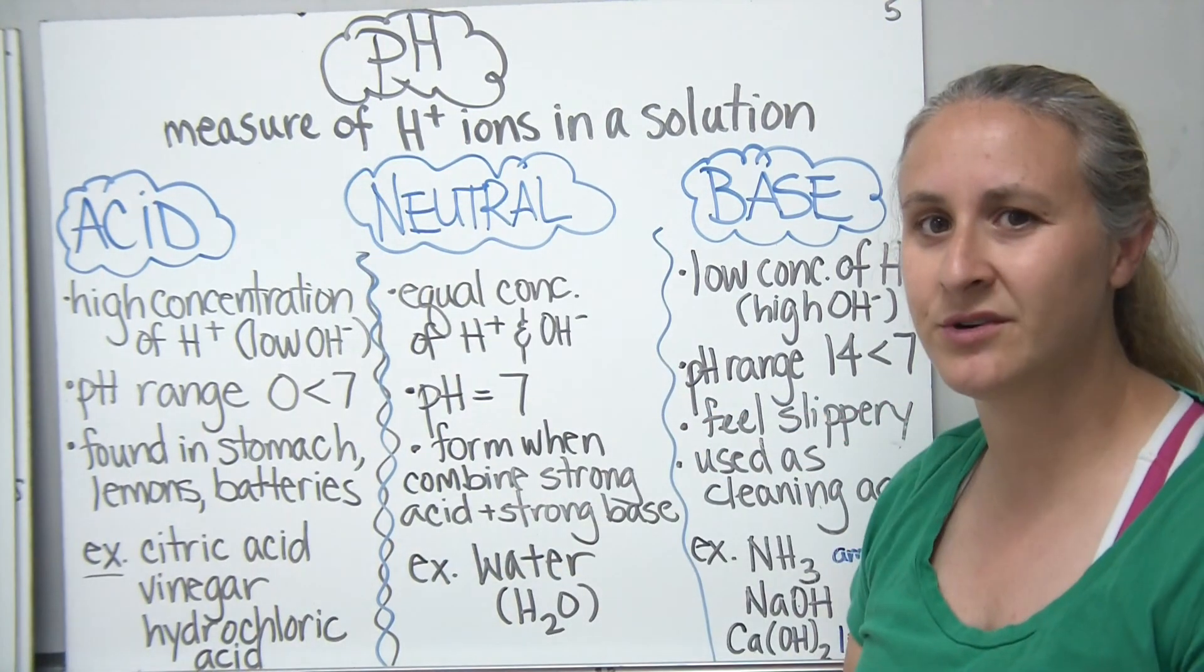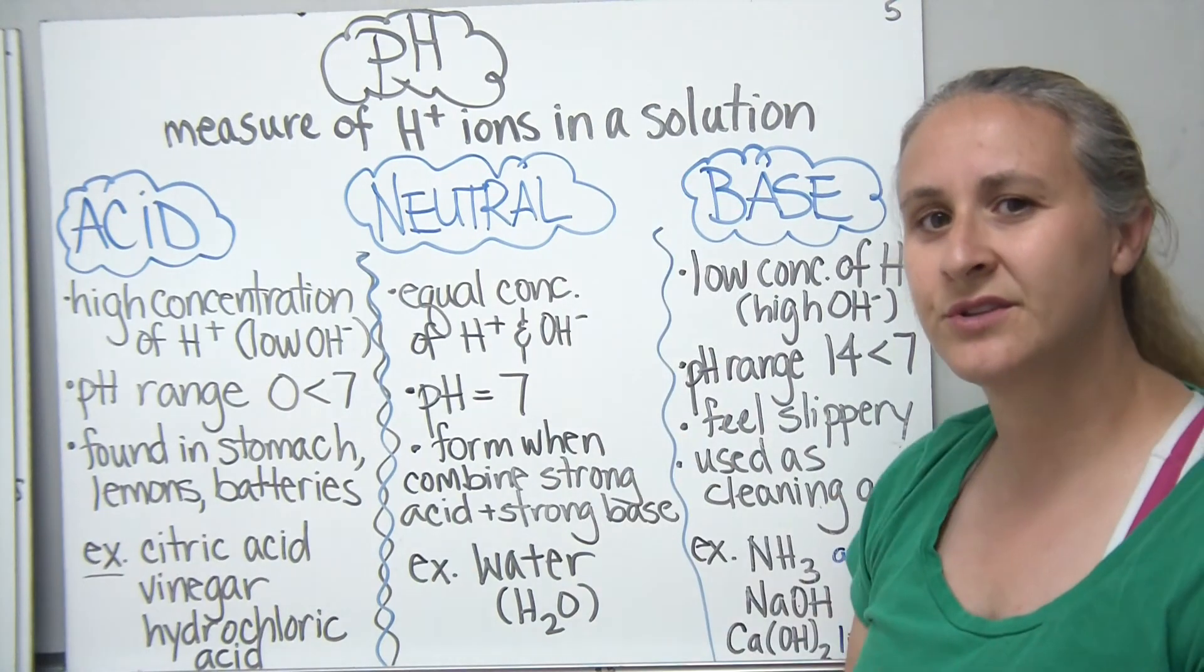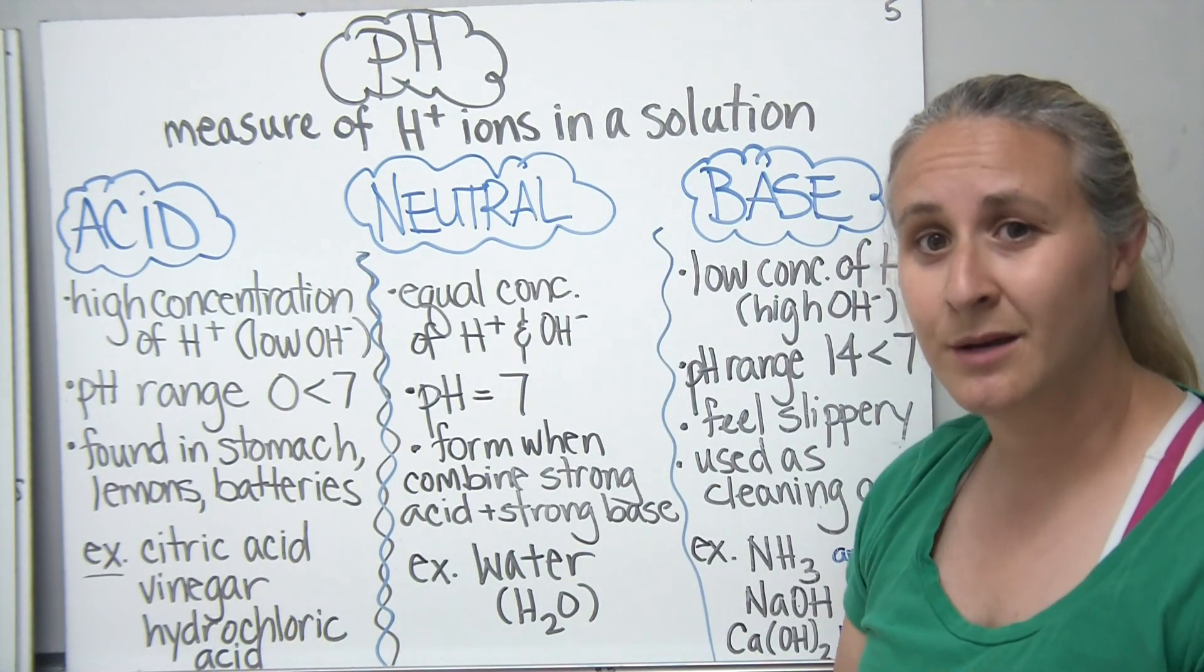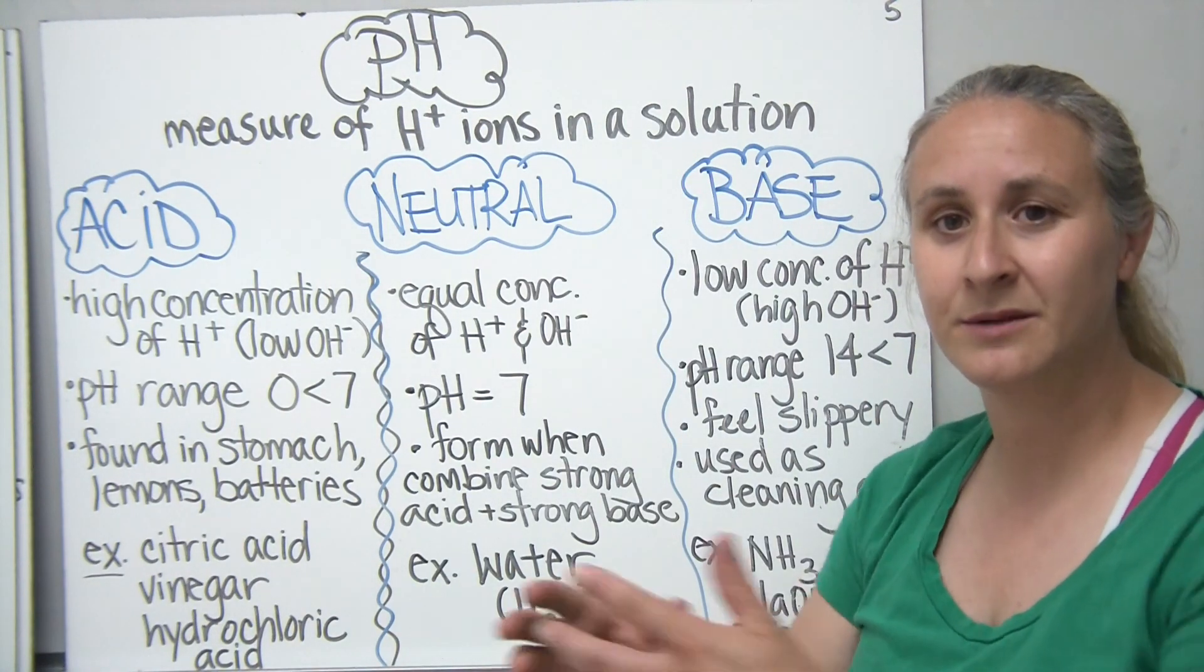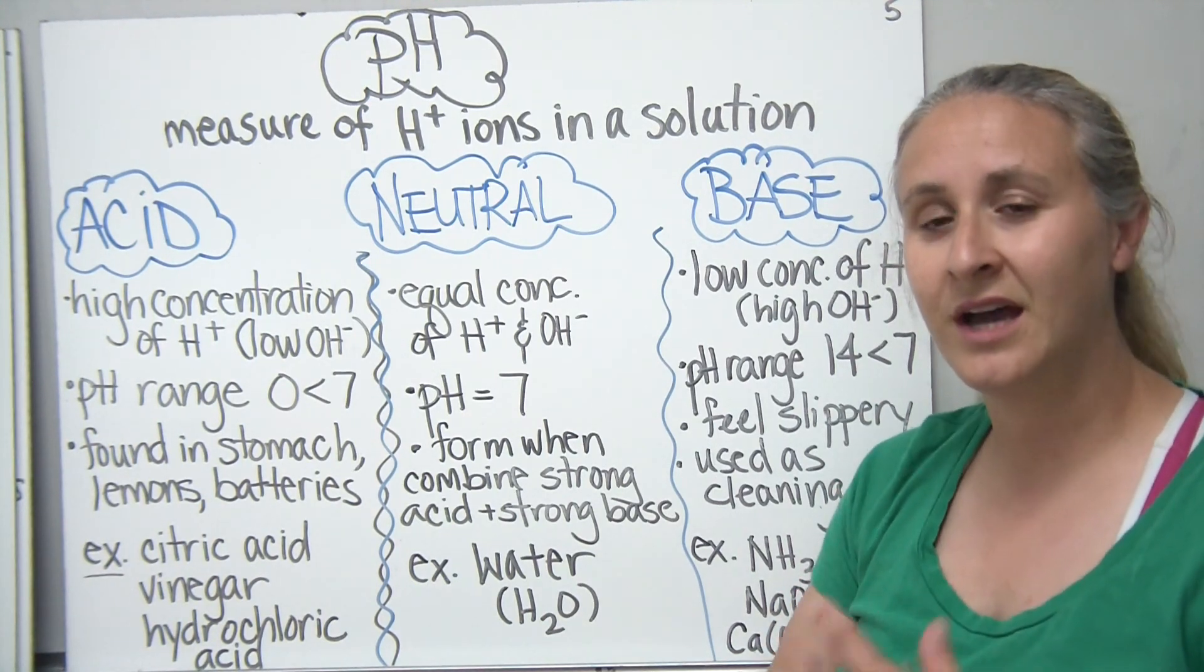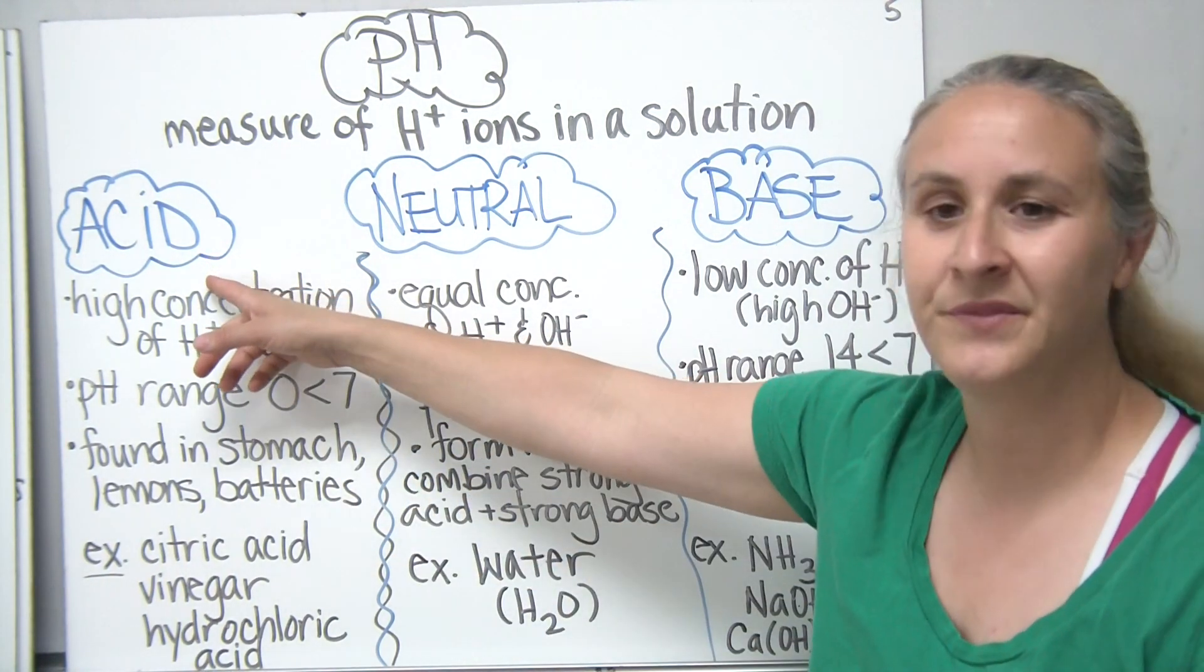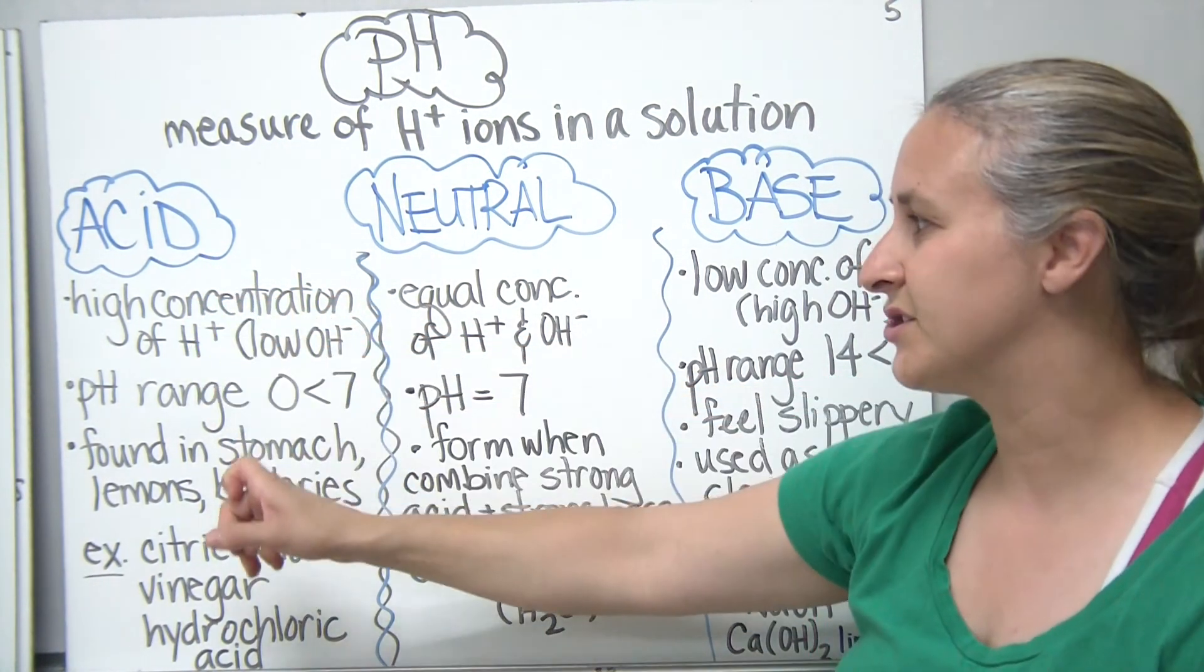And a lot of times we'll talk about the pH of a solution. The pH is really just a measure of the hydrogen ions, the H plus ions, in a solution. Hydrogen ions come from that compound. When you take it and put it into a solution of, let's say, water, they break down and the hydrogen gets released, and they get added to the solution, which can make them very acidic in some situations.